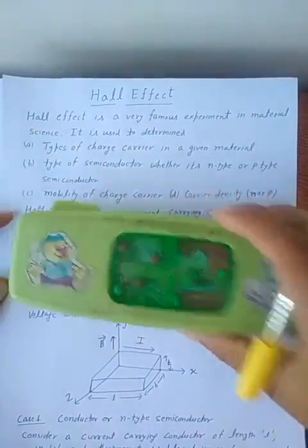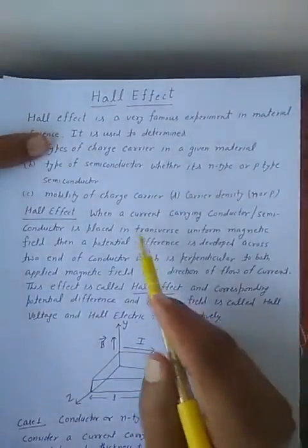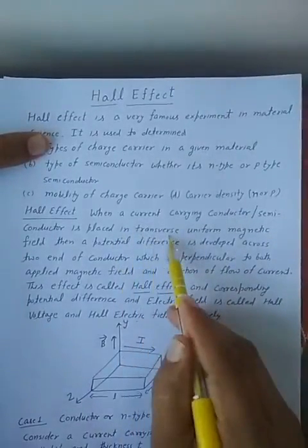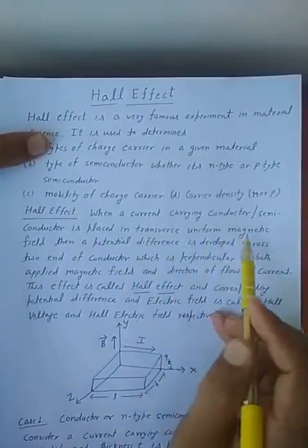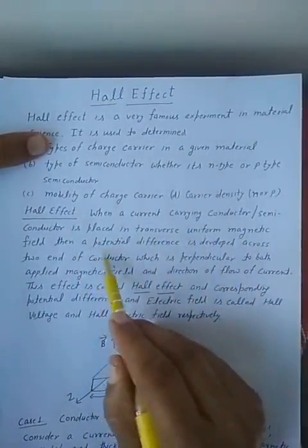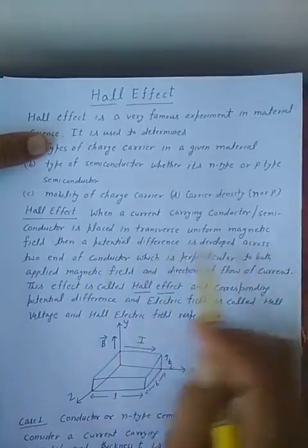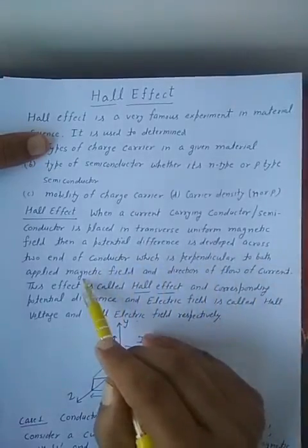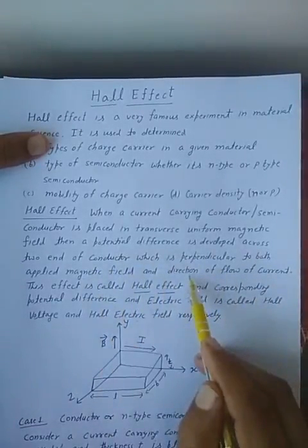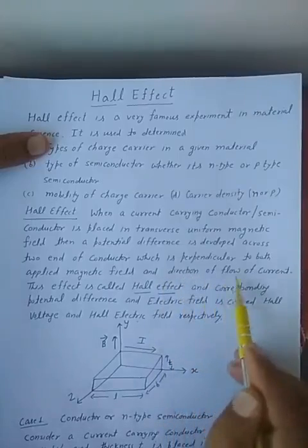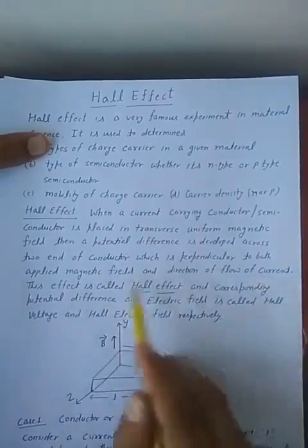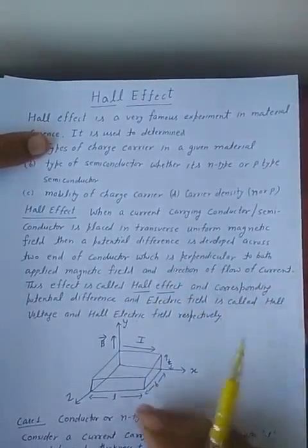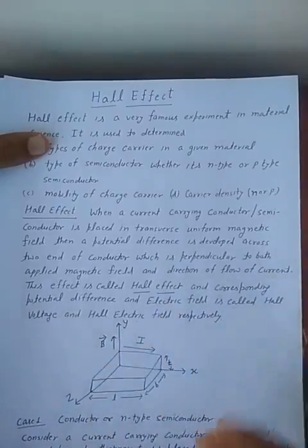Let me read it again. When a current-carrying conductor or semiconductor is placed in a transverse — meaning perpendicular — uniform magnetic field, then a potential difference is developed across two ends of the conductor, which is perpendicular to both the applied magnetic field and the direction of flow of current. This effect is called Hall Effect, and the developed voltage and electric field are called Hall Voltage and Hall Electric Field.